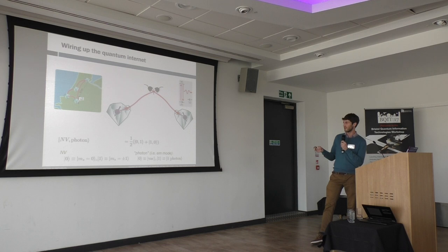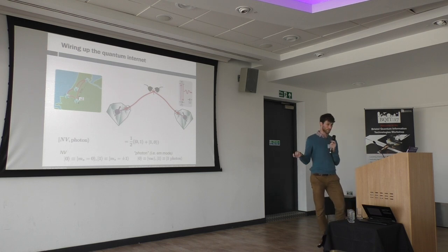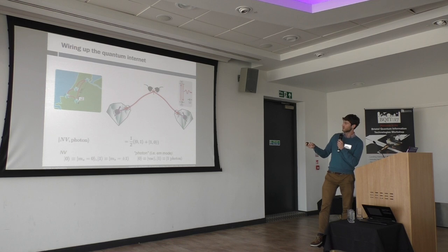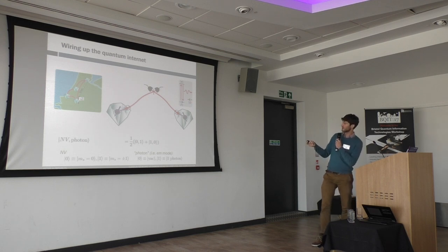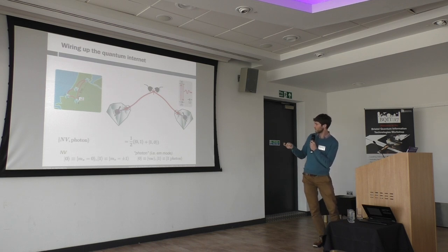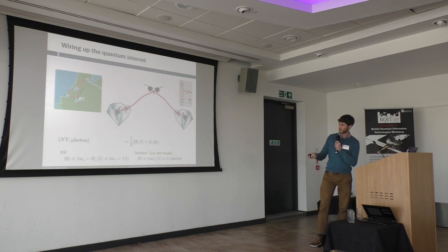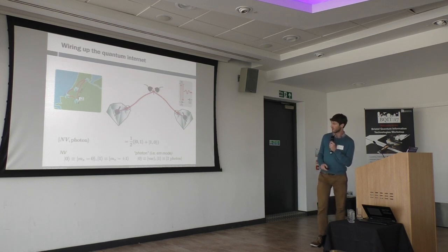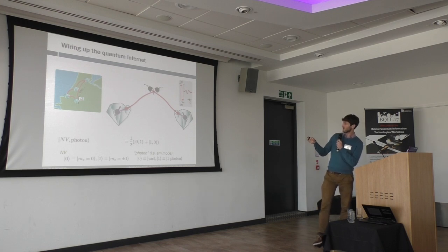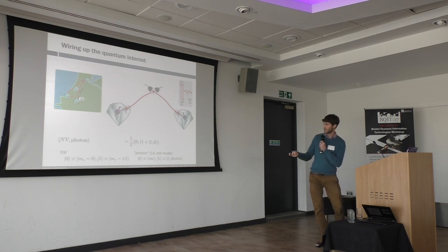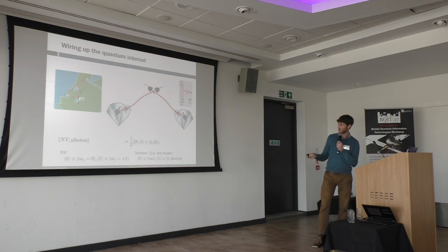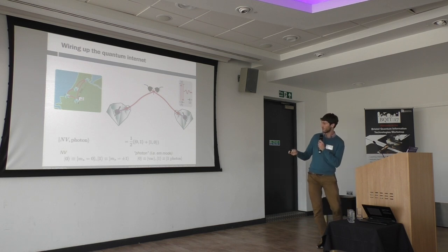How would you wire up the quantum internet using NVs in an ideal way? We have a spin-selective optical interface: only if the nitrogen vacancy is in one state — the MS equals zero state, the bright state — can it be excited up to an excited state and emit a photon by spontaneous emission, whereas if it's in the other state it remains dark. So by applying resonant excitation when the NV is in a superposition state, we can create an entangled state between the NV spin and the presence or absence of a photon — spin-photon entanglement.